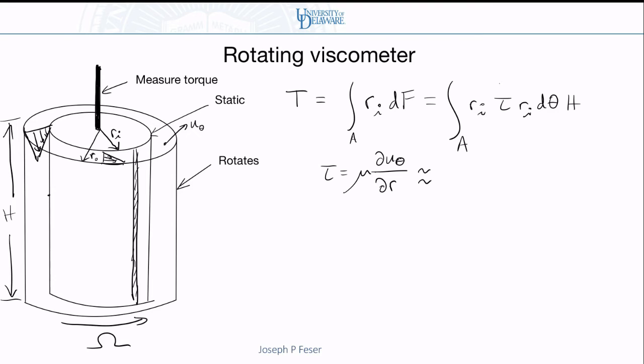If I have a linear velocity profile, which I will if I have a small gap anyway, then this is given by the difference between the velocity on the outer wall, which is r0 times omega minus the velocity at the inner wall, which is just 0, divided by the change in radius, which is r0 minus ri. So that's basically the approximation of this slope. And in fact, that's actually an exact value if the velocity profile is linear.